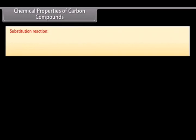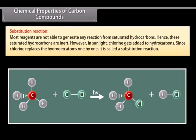Substitution reaction. Most reagents are not able to generate any reaction from saturated hydrocarbons. Hence, these saturated hydrocarbons are inert. However, in sunlight, chlorine gets added to hydrocarbons. Since chlorine replaces the hydrogen atoms one by one, it is called a substitution reaction.